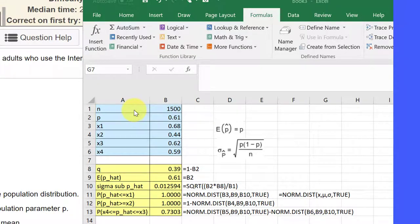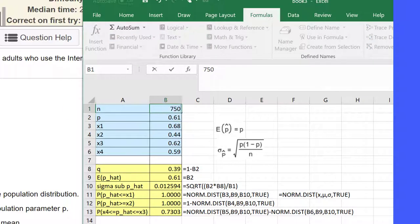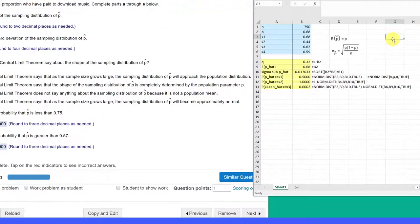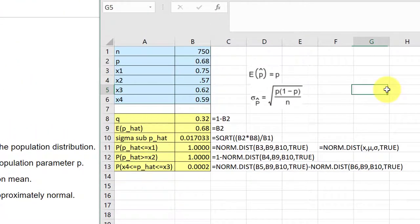So here you can see I entered the n which in this case is 750, and our p is 0.68. And looking down here, we're going to check out two limits on p hat: 0.75 and 0.57. So I'm going to enter those. Now I've added some additional values there.